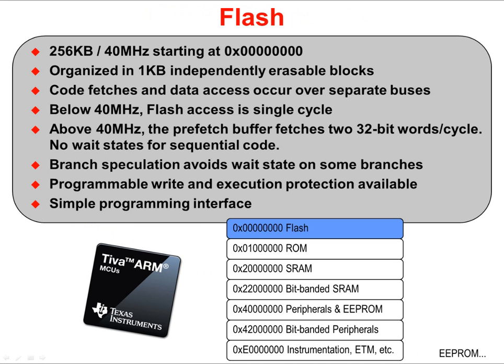Below 40 MHz, access to flash memory is single cycle. The instruction prefetch fetches two 32-bit words per cycle. Since Thumb2 instructions are a maximum of 32 bits in length, the device can fetch at least two instructions per cycle. This prefetch is important at speeds above 40 MHz. Because of it, in a straight-line sequential code, no wait states are required, even at 80 MHz.